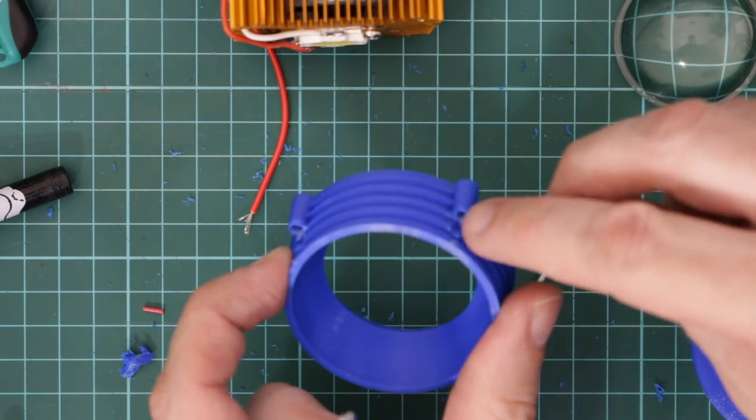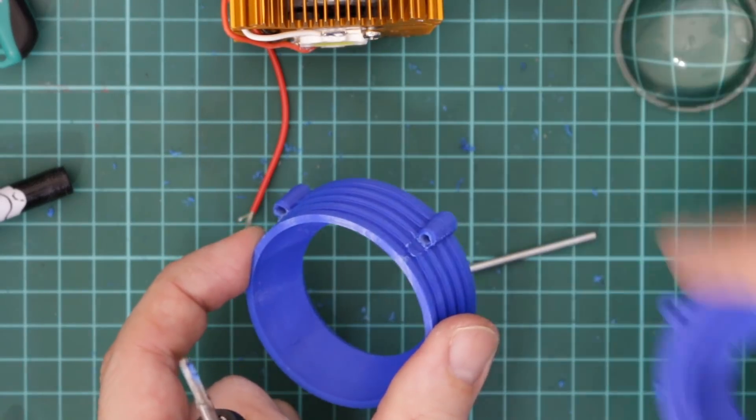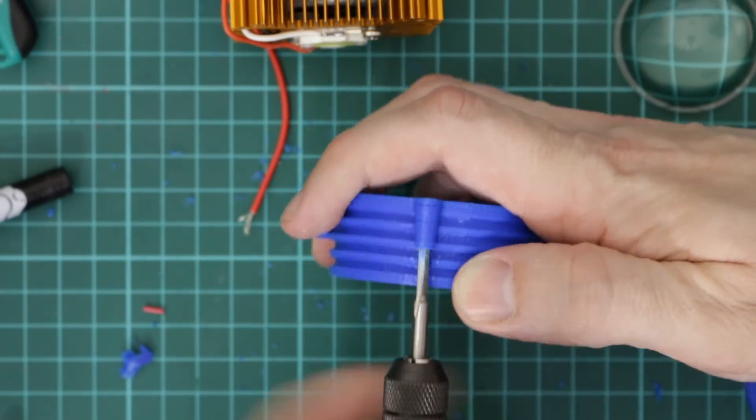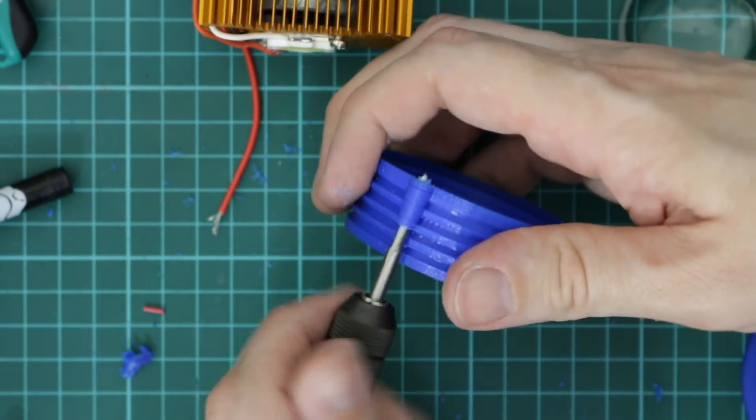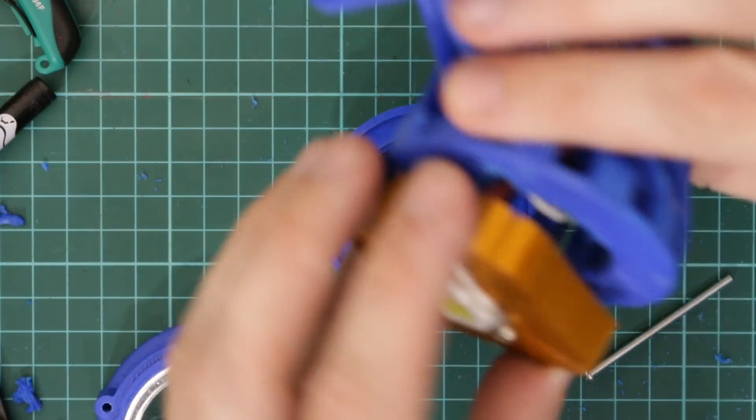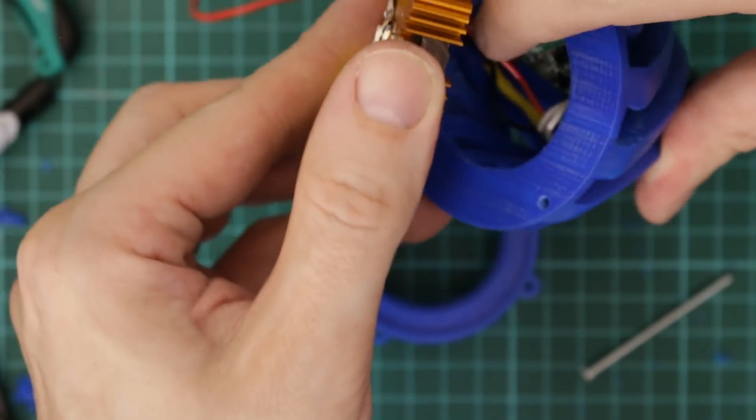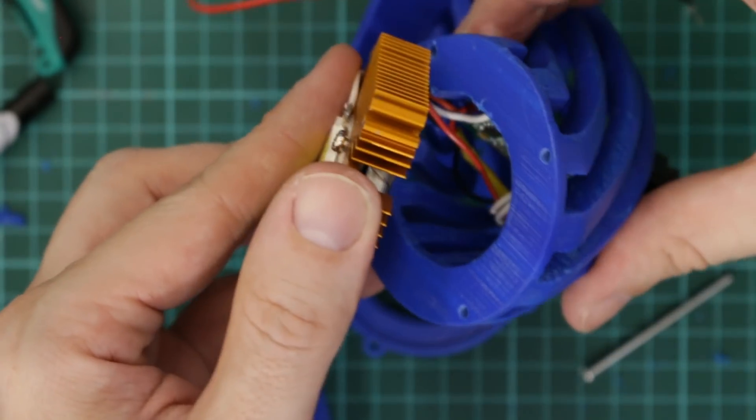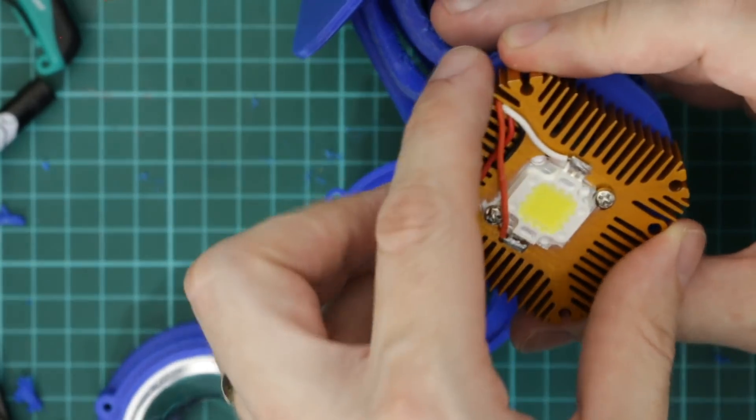Next I'm just going to tap some holes, M3 holes for these M3 bolts through these two parts here. Then I'll just repeat that for all the holes. So next comes the assembly. So I'll just make sure that the driver's tucked down nicely inside there. And the wires are going down that cutout.